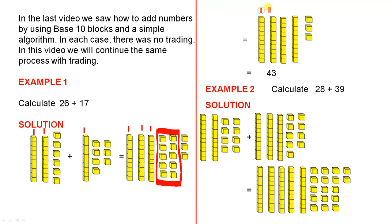So we already had 3 and here is the extra 10. So that gives us 10, 20, 30, 40 and there are our 3 singles and the answer is 43. So that is a perfect example of how you do trading. That is, you give up 10 singles and you are given one of these longs.